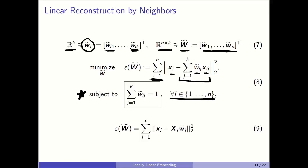One might note: what if one weight is one million and another is minus one million — they cancel while still satisfying the sum-to-one constraint? However, in LLE the solution to this optimization has a closed-form solution and is not iterative. Therefore it does not result in explosion of weights. If solved iteratively, the weights would gradually start to explode.